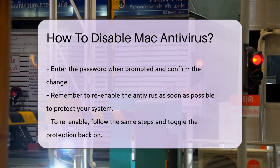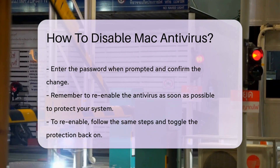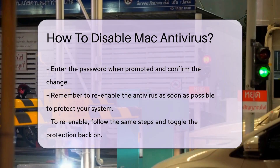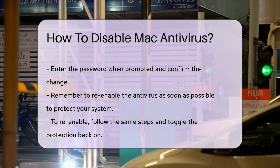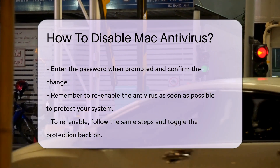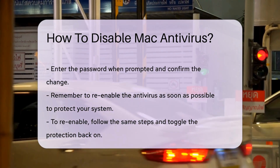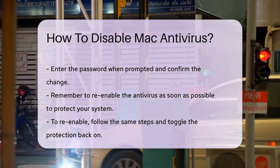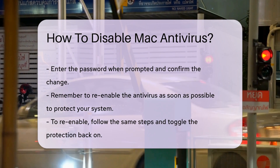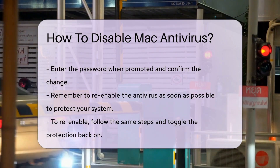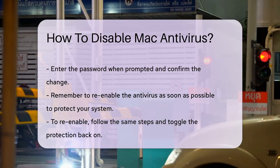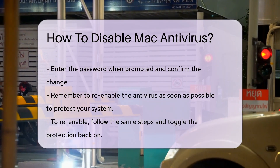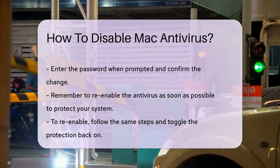In some cases, you may need to disable specific components of the antivirus software rather than the entire program. For example, you might only need to disable the firewall or web protection features. This can usually be done through the same settings or preferences menu.